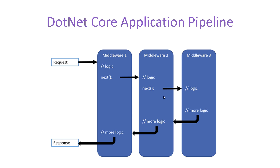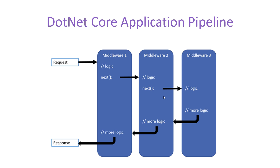If we have written Next in the first middleware, the request travels from the first middleware to the second middleware. There will be some logic in the second middleware as well, and if we have the Next method, the request goes to the third middleware and so on. You can define any number of middlewares in your application as per the requirement. Once all the middleware logic is completed, we get the response — and in the same manner the response will be handled in reverse: from three to two, and then two to one.